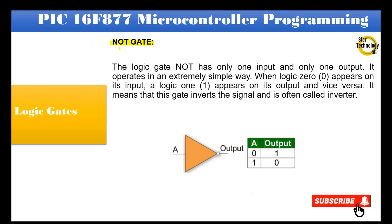NOT gate: The NOT gate has only one input and one output. It operates in an extremely simple way — when logic 0 appears on its input, a logic 1 appears on its output, and vice versa. This gate inverts the signal and is often called an inverter. If input A is logic 0, then the output is logic 1. If input A is logic 1, then the output is logic 0.